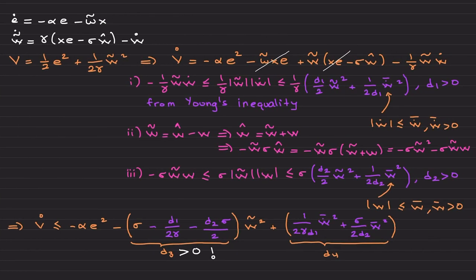Let's perform the analysis. This is the e dot dynamics; this is w tilde dot dynamics, which is w hat dot minus w dot. I am using scalar systems—our generic Lyapunov function candidate. When you take its derivative, you have an e dot term here and here a w tilde w tilde dot term.